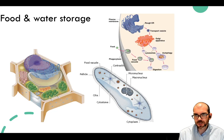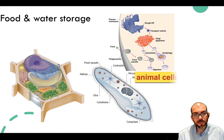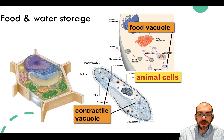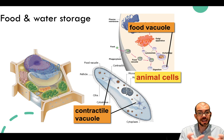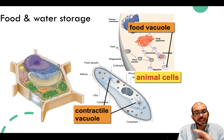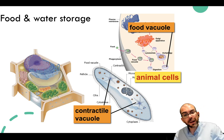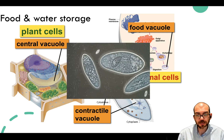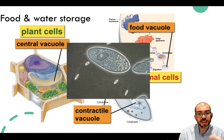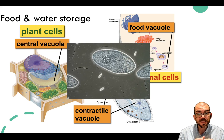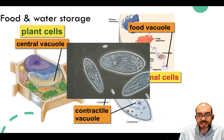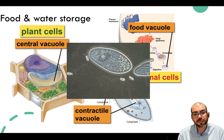Vacuoles can be very specialized. With plant cells we have the central vacuole, and in animal cells they'll often hold food for later or can be used for locomotion. A paramecium is able to use its vacuole to take in water and then squeeze it out, and that force is used to move the paramecium around as a form of jet propulsion—you can see it filling its vacuole with water, then squeezing it out to move in another direction.